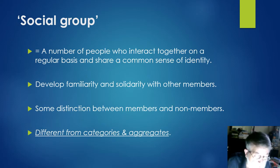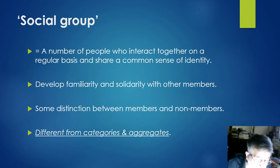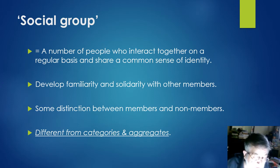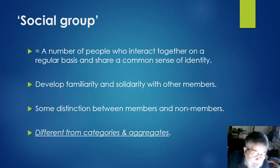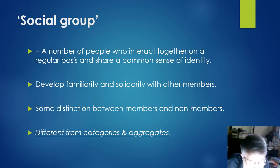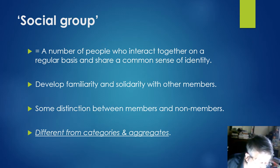For sociologists, a social group can be defined as a number of people who interact together on a regular basis and share a common sense of identity. Such groups vary enormously, from family units and circles of friends to large organisations. In all cases, there is likely to develop a familiarity and solidarity with other members of the group, as well as a shared sense of identity and expectations about what is expected of group members, and some distinction between those who are members of the group and those who are not.